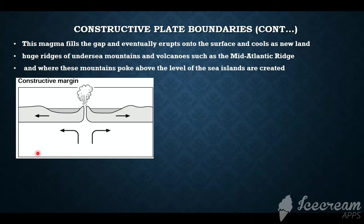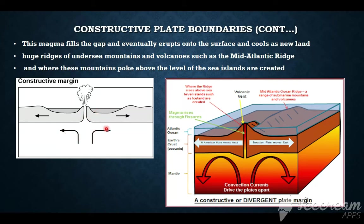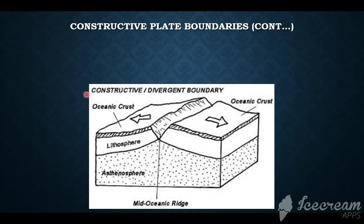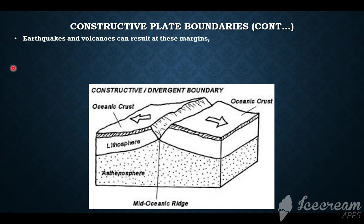This is known as the constructive margin, also known as the divergent margin, because to diverge is to move apart. The convection currents inside are moving apart, and as a result the oceanic plates move apart to create a space which results in magma escaping. When the oceanic crust diverges, it is also known as sea-floor spreading. Earthquakes and volcanoes can result at these margins. Earthquakes are mild compared to those at the destructive plate boundary.